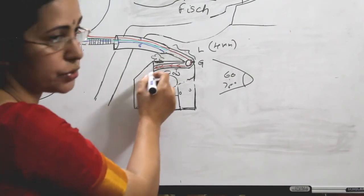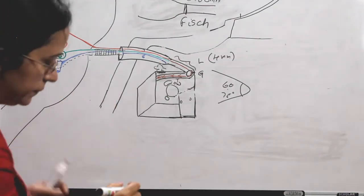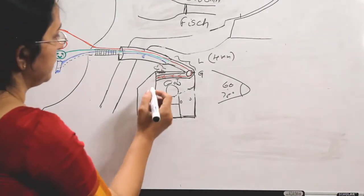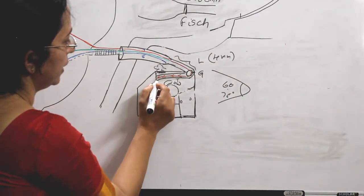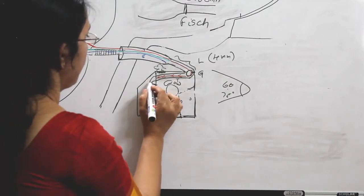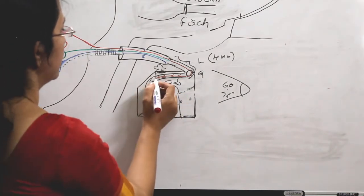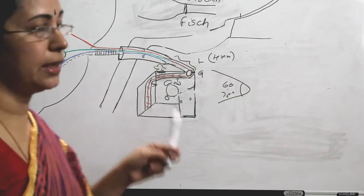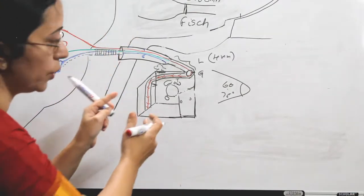On reaching the posterior wall, at the level of the pyramid, the facial nerve goes downward — in the facial canal itself. It curves downward, and that is the second genu. That part going through the mastoid is the mastoid segment.